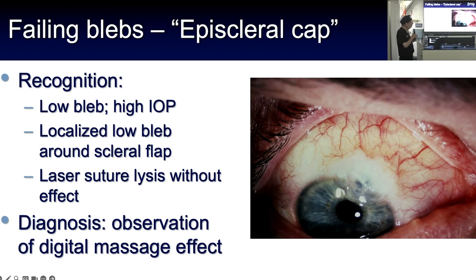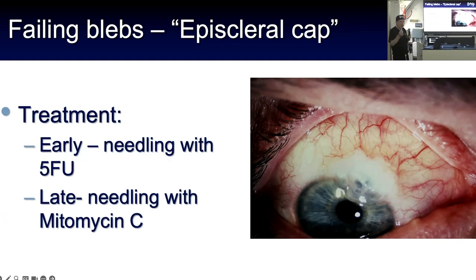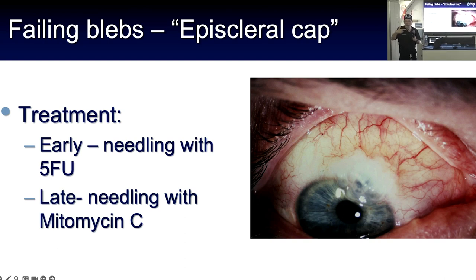This is called an episcleral cap — fibrosis just over the trabeculectomy site. Even if you laser the sutures, you don't see much effect. We'll do massage for a while to see if it just opens things up, but sometimes we'll do a needling with 5-FU and go in to actually break things up. I prefer to do it in a minor room with the patient lying down. I approach temporally, usually using a 30 or 27-gauge needle from the side, inject some 5-FU to raise things and avoid hitting blood vessels, then sweep with the needle to open up the episcleral cap.